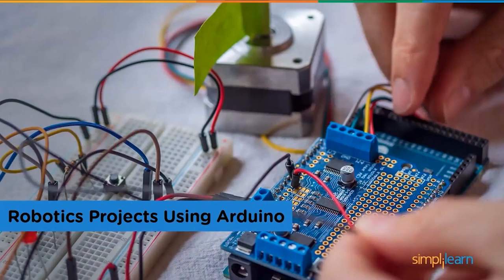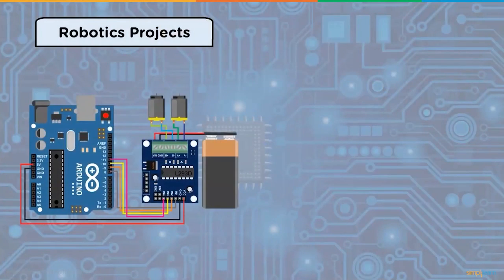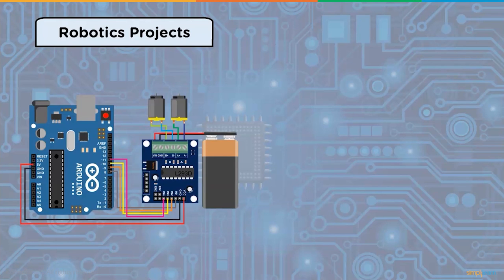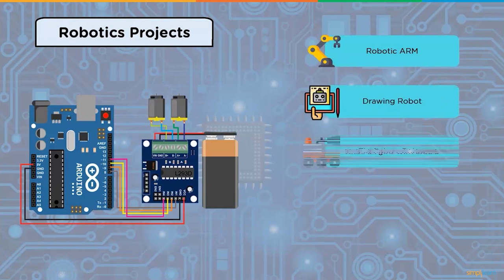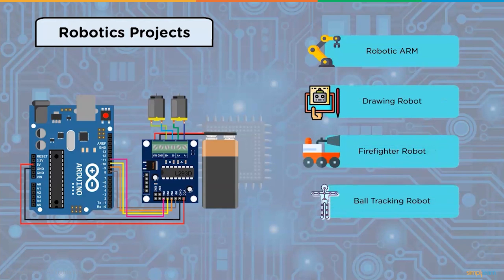Robotics projects using Arduino: we can learn about electronics, mechanics, and software using Arduino robotics projects. It includes a number of project examples that are easy to replicate on a robust robotics platform. Some robotics projects are robotic arm, drawing robot, firefighter robot, ball tracking robot, and spider robot.